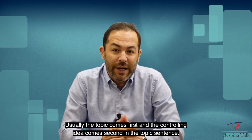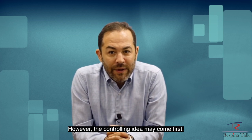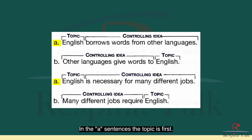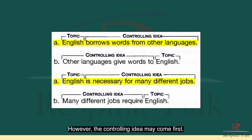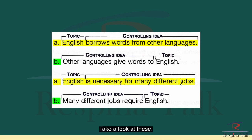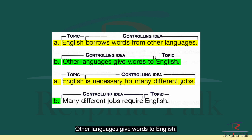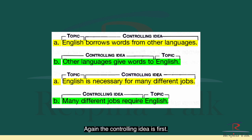Usually the topic comes first and the controlling idea comes second in the topic sentence. However, the controlling idea may come first. In the A sentences, the topic is first — for example, 'English borrows words from other languages' and 'English is necessary for many different jobs.' In the B sentences, the controlling idea comes first — for example, 'Other languages give words to English' and 'Many different jobs require English.'